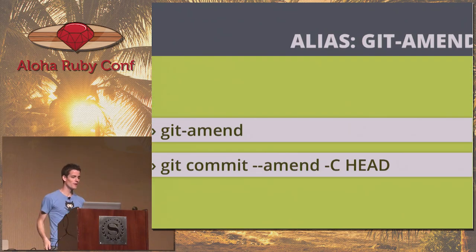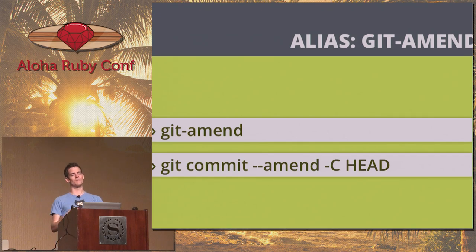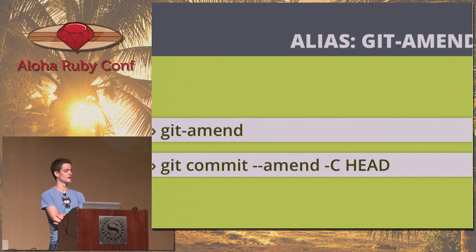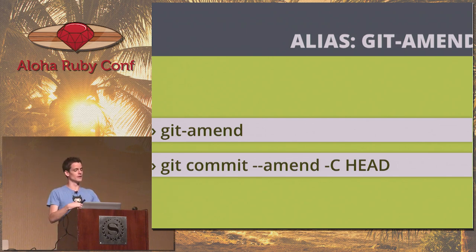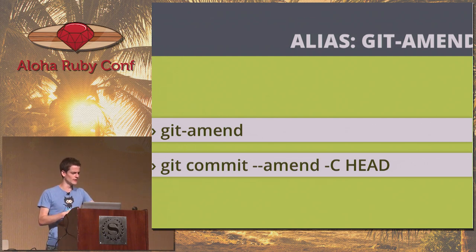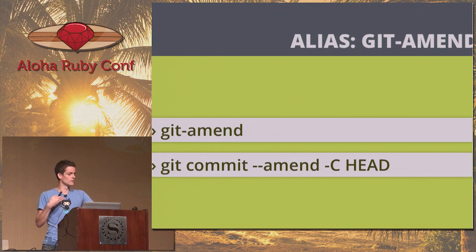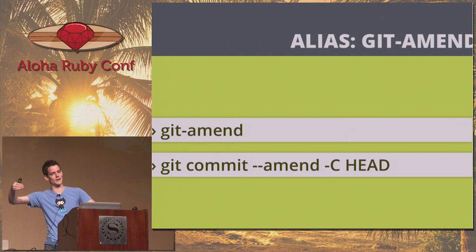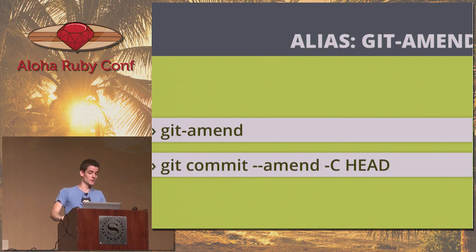Git amend: I use this all the time. If I commit something and haven't pushed yet and want to fix a misspelling, I have git amend aliased to git commit --amend -C HEAD. I'll amend it to the latest commit. You get smart logical commits rather than a string of 'oops forgot this' commits.